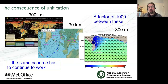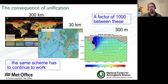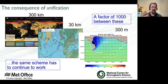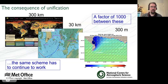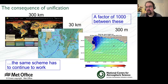UKCA is one of the schemes that deals with chemistry and aerosols, and it has to work at a range of scales - from 300 kilometres for climate resolution, down to forecast type resolution - global forecasts or down to really high resolution for research work. The same scheme has to work across all these different scales.